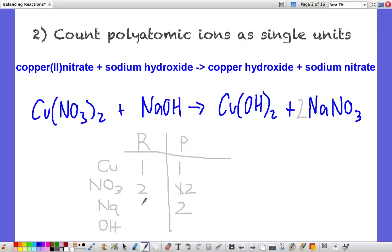On the left we've only got one. We need to fix that one. So we're going to put a two in front of the sodium hydroxide to give us two sodiums. Now that's also impacted the hydroxide ion. We've got two hydroxides and two hydroxides on the right. So that's actually a balanced equation now.